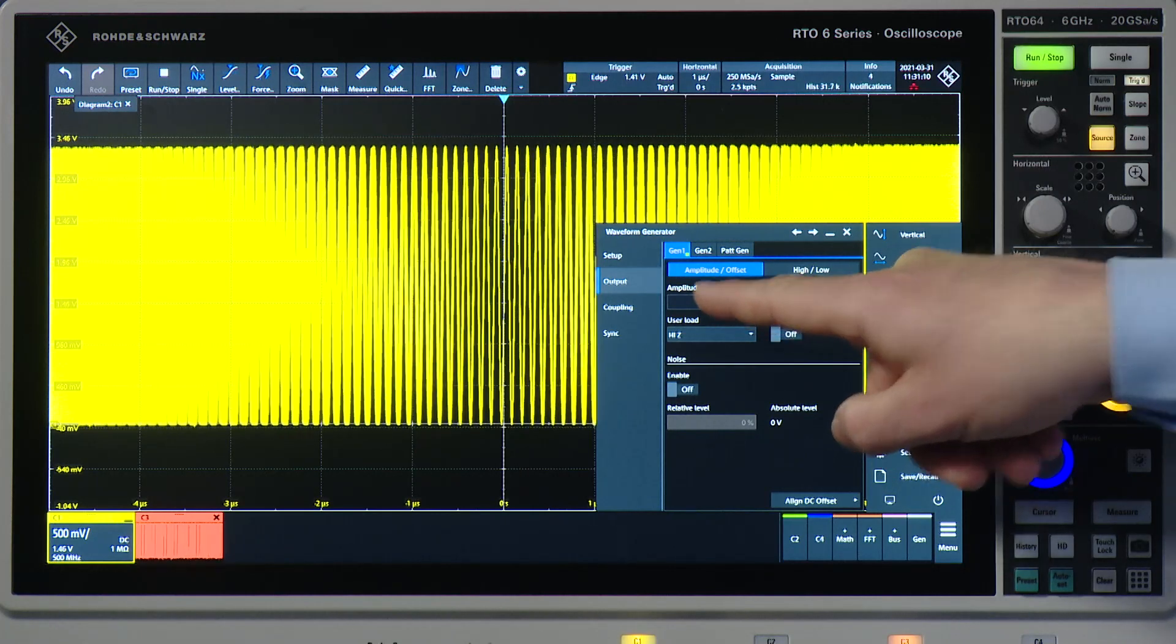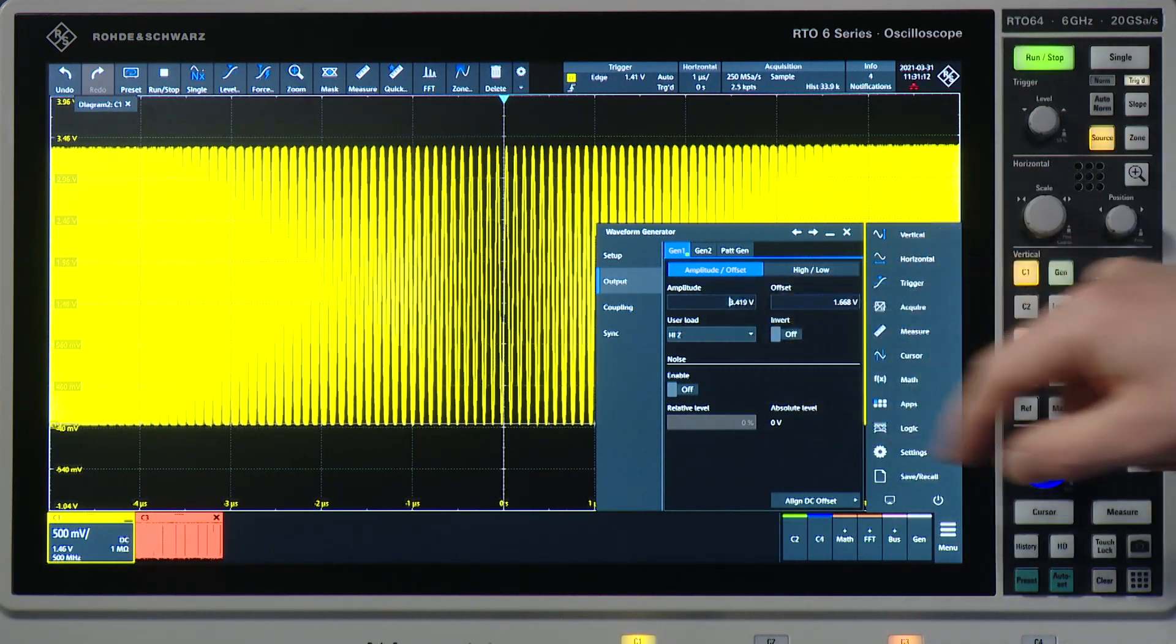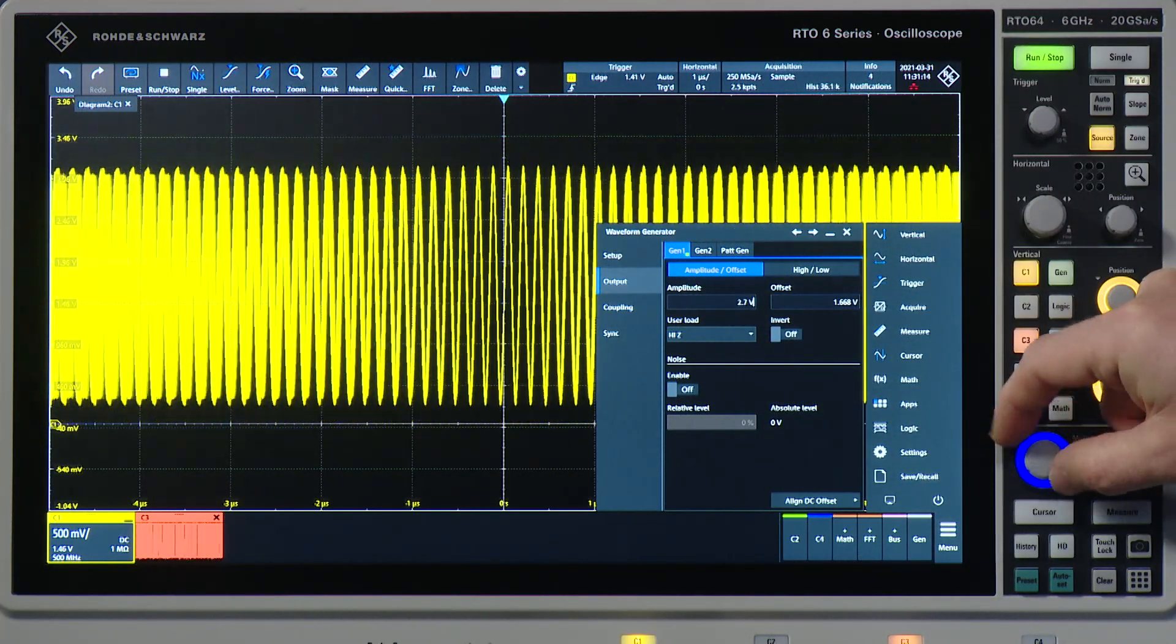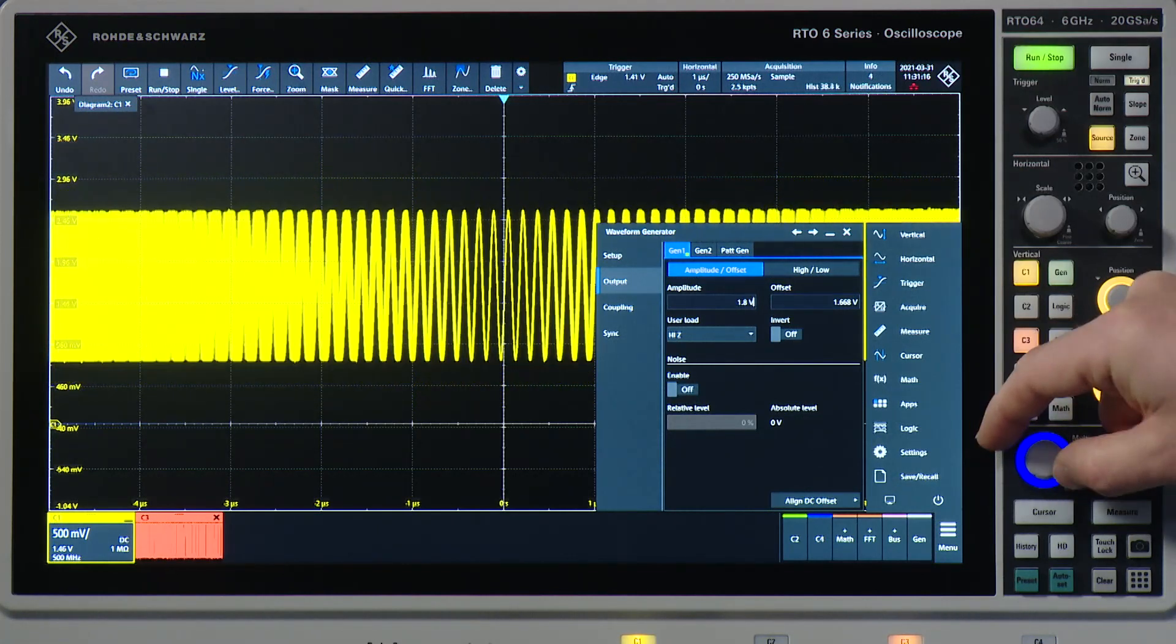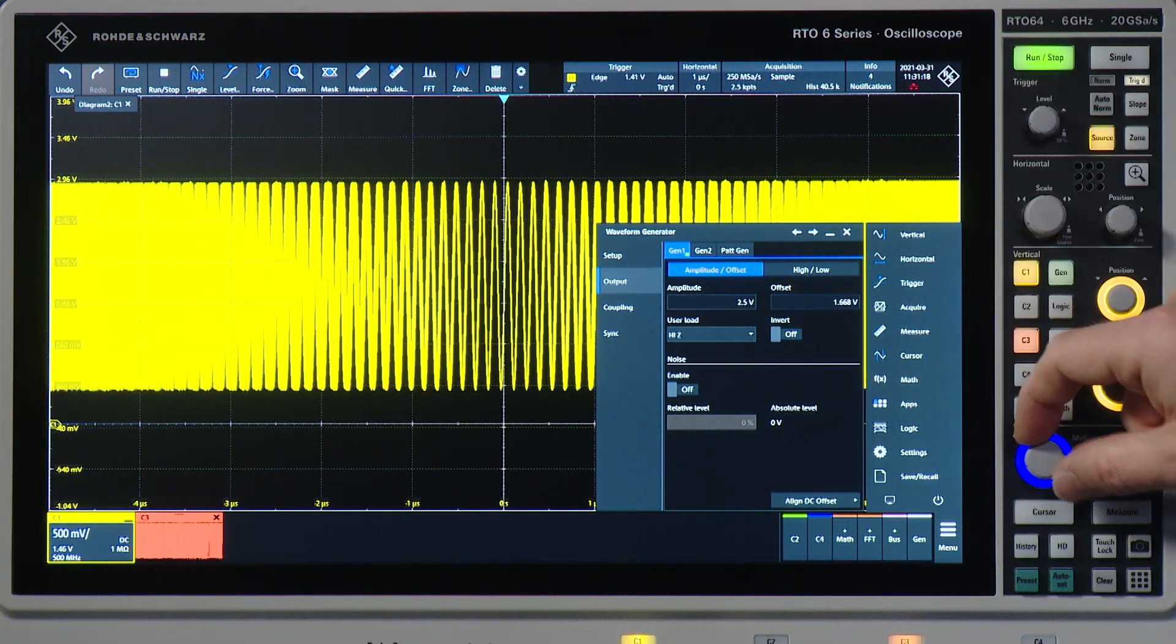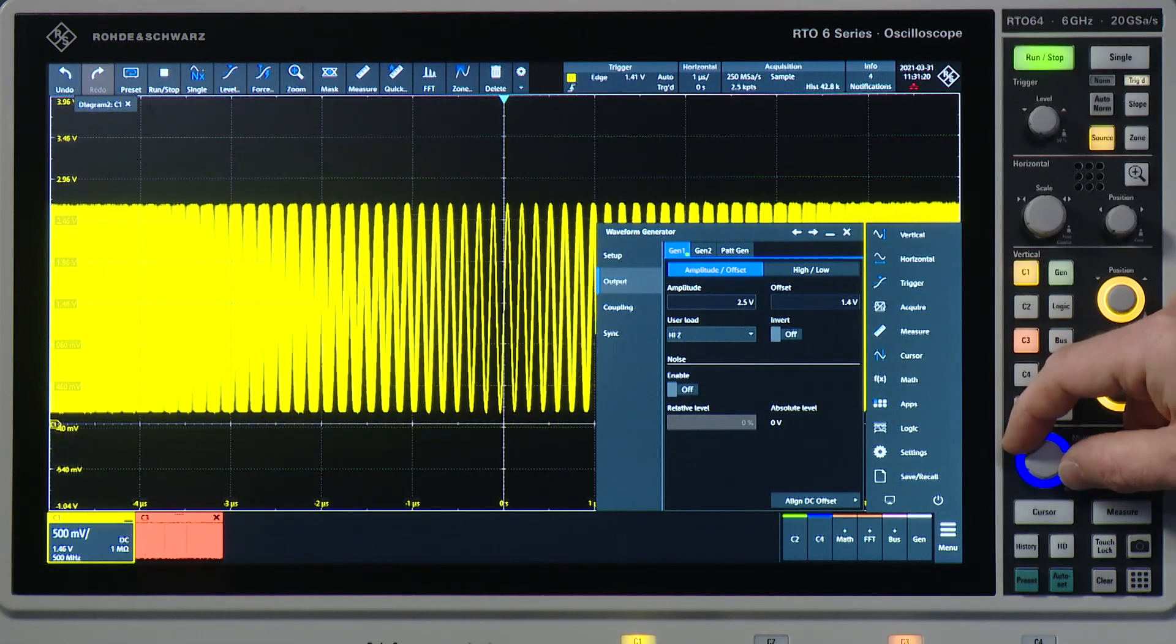If you go to the output menu you can for example change the amplitude and also the offset of the generator output.